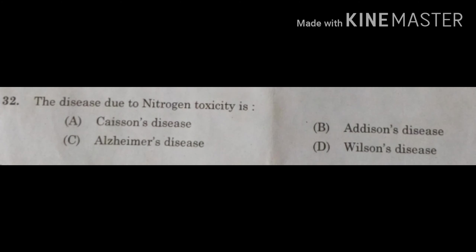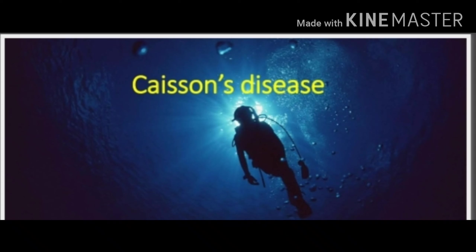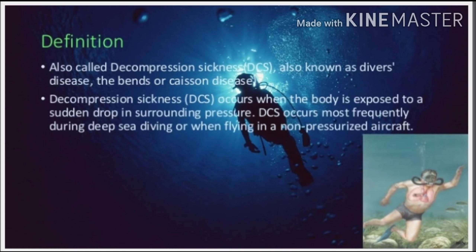I am now discussing question number 32. The question is: the disease due to nitrogen toxicity is — option A: Caisson's disease; option B: Addison's disease; option C: Alzheimer's disease; option D: Wilson's disease. Let us understand some important points regarding Caisson's disease in brief.